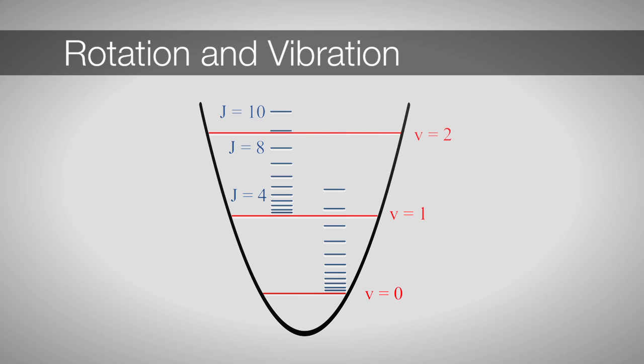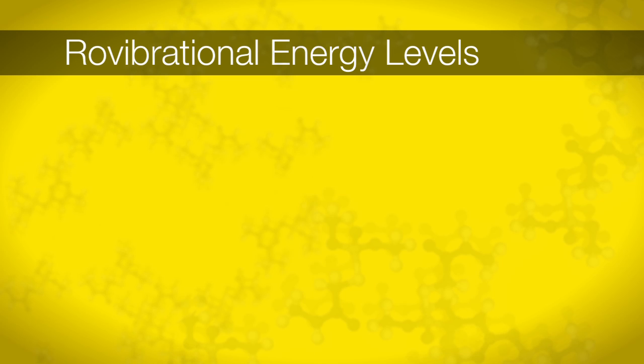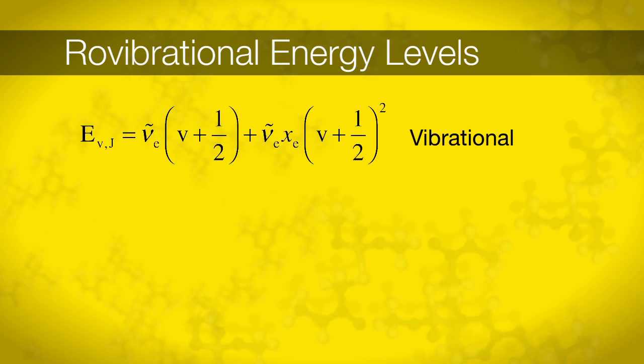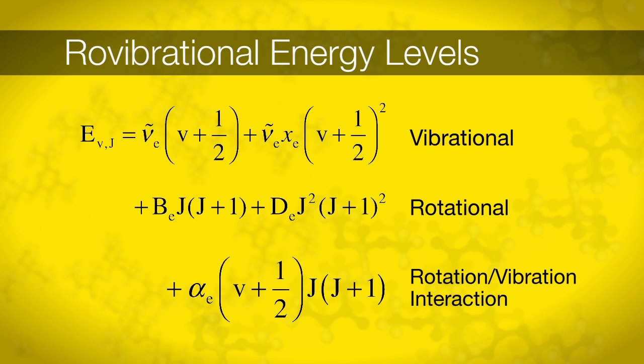The energy required to excite rotations is much smaller than that required for vibrations. Therefore, when we excite vibrations, we also excite rotations. When rotational and vibrational transitions can be observed together, we say we are performing rovibrational spectroscopy. In the simplest case, the rovibrational energy levels are best described as a sum of the two independent models, the harmonic oscillator and the rigid rotor. Our final expression for the energy levels we'll probe in this experiment is given by the following expression. Here, we've broken down the equation into three components, one that represents the anharmonic oscillator, one for the not-so-rigid rotor, and a final term that accounts for the coupling of the vibrational and rotational motion.